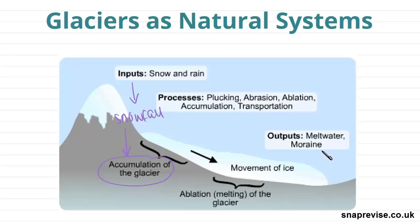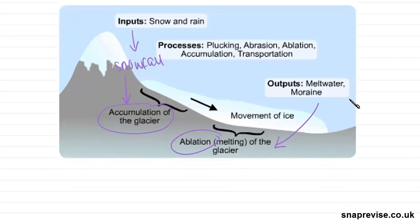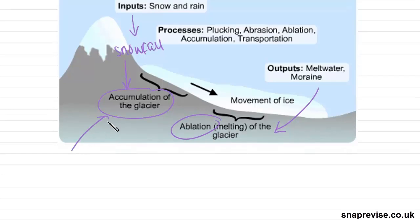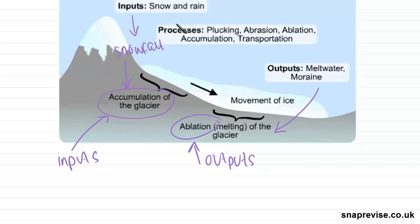At the other end of our system we have our outputs, shown here as meltwater and moraine, and these can also be named as ablation, as shown here. To simplify things, we can think of accumulation as our inputs and ablation as our outputs. Through this system, our inputs are transferred down the valley under the influence of gravity, which is pulling it down the slope.